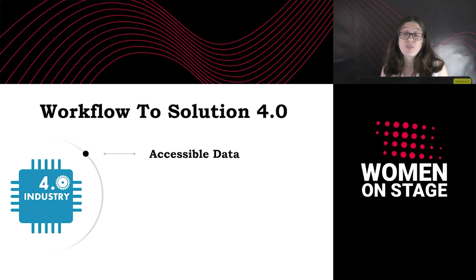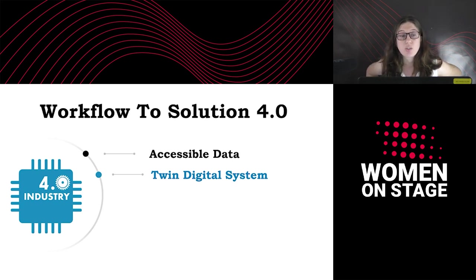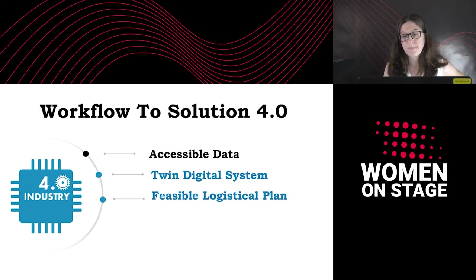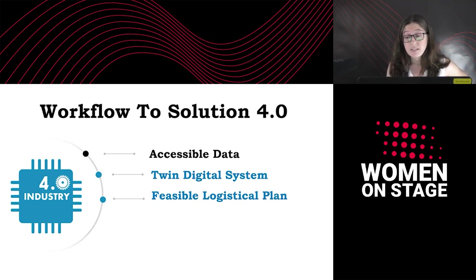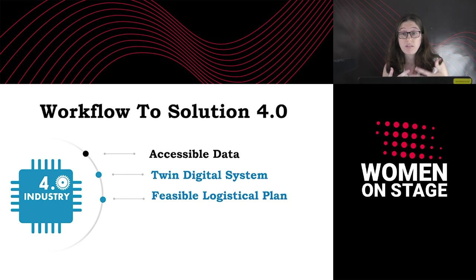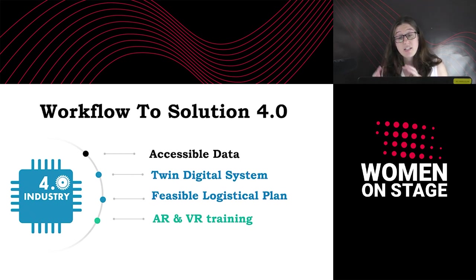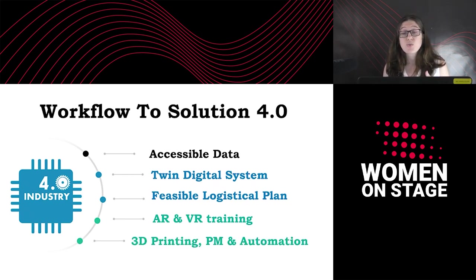Problem solving — or how to fix the actual problem. Performing a digital simulation on a twin system using the collected data to mimic the conditions during the fault, to understand the malfunction. At the same time, the logistic leadership will plan a new feasible production strategy considering material, manpower, and equipment capabilities. Preventive action — or how to prevent a similar problem from occurring in the future. Improving the training process: production employees and end users using AR/VR training. Improving the process using 3D printing, predictive maintenance, and automation.